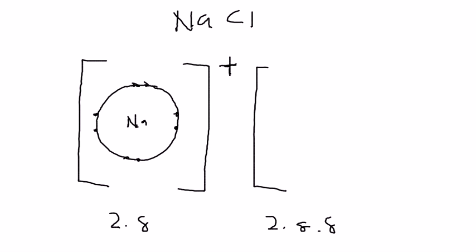For chloride ion it's 2.8.8. For sodium, if I want to show you the outer layer, the outer layer is just like that. But if I want to show you the full layer, sodium actually has two layers.